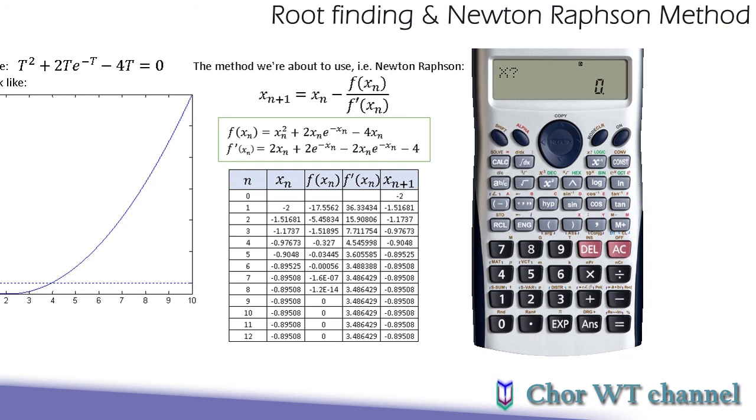And now we try with minus 2. So shift solve, minus 2, and then shift solve. So now we'll be able to get the third solution. It's negative 0.895, the same one that we have calculated here.